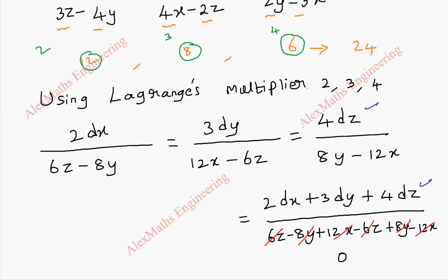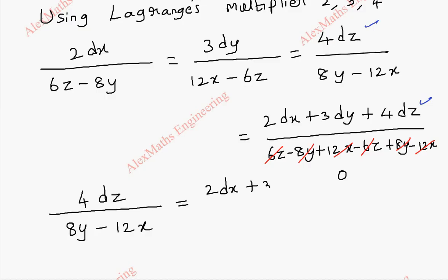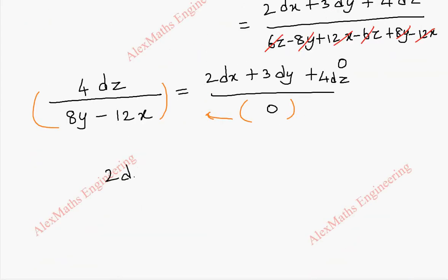Once again, we choose any two terms — let's choose the last two terms. So 4 dz over (8y minus 12x) equals (2 dx plus 3 dy plus 4 dz) divided by 0. By cross multiplication, this entire term is multiplied with 0, and finally the remaining terms give 2 dx plus 3 dy plus 4 dz equal to 0.